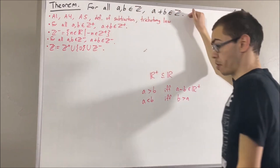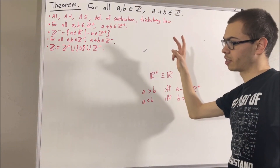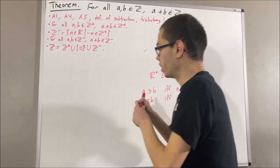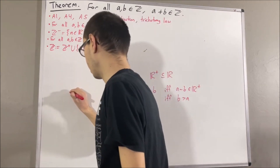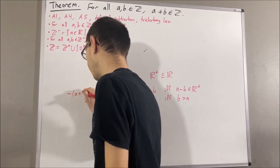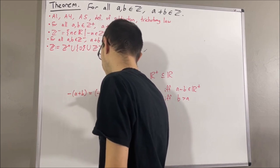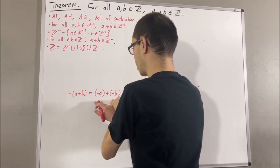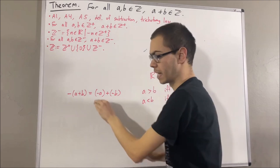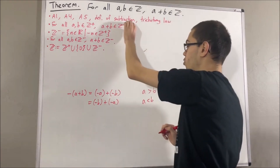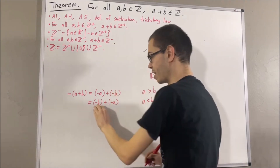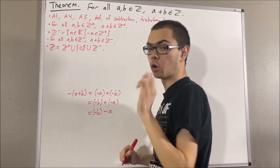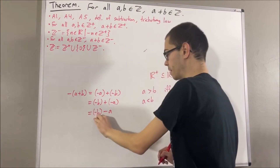To prove this theorem, we are going to use two other preliminary results. When we proved that the negative integers is closed under addition, we first proved: given any two real numbers a and b, the negative of (a plus b) is equal to the negative of a plus the negative of b. By axiom 1, we can swap these around, giving us the negative of b plus the negative of a. Then by definition of subtraction, this equals the negative of b minus a. So for all real numbers a and b, the negative of (a plus b) equals the negative of b minus a.